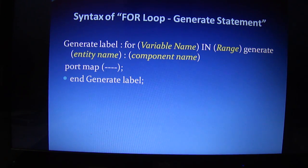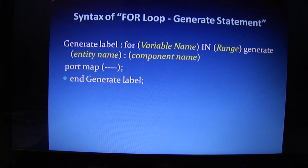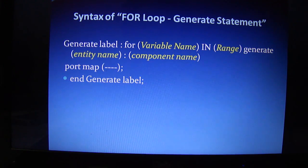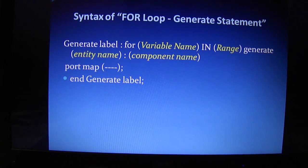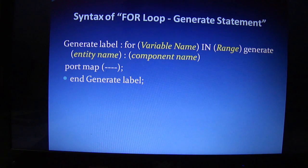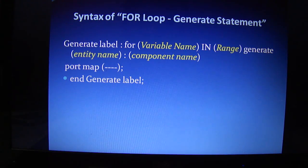Here is the syntax of the for loop generate statement. First, you need to write a generate label. Always remember: never start your label with a numeric number — the label must always be alphanumeric or alphabetical. Then a colon, followed by the variable name from which you would like to initiate your loop, then the range indicating how many times you want to run the loop, then the generate keyword, the entity name and component name you would like to replicate, then port mapping between the entity and component names, and finally end generate.